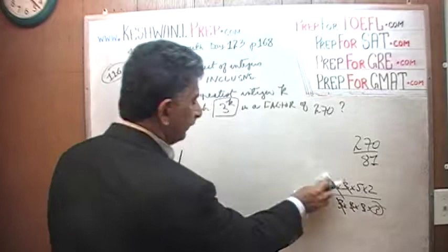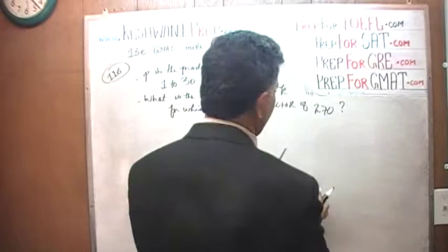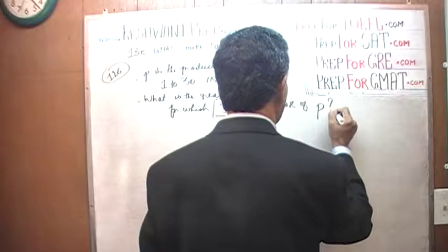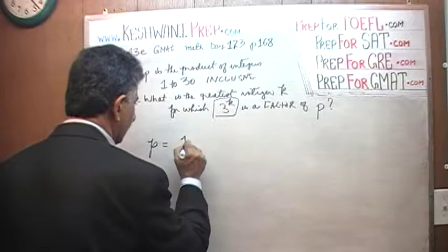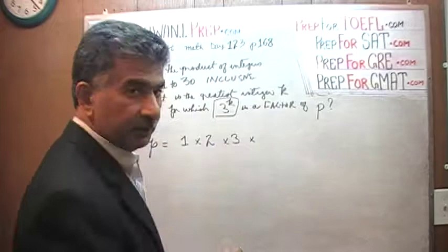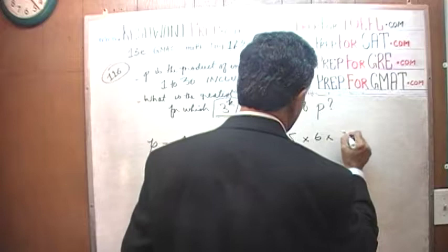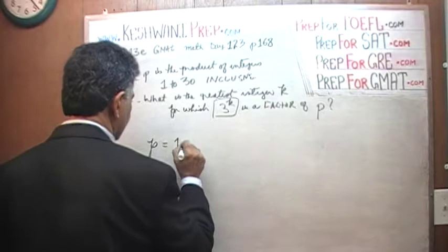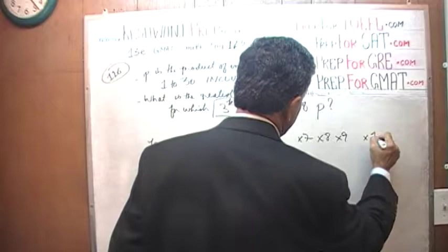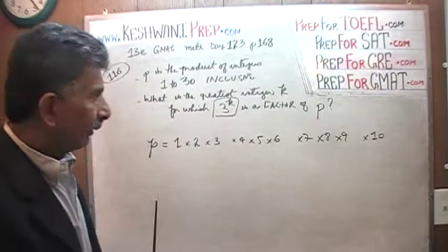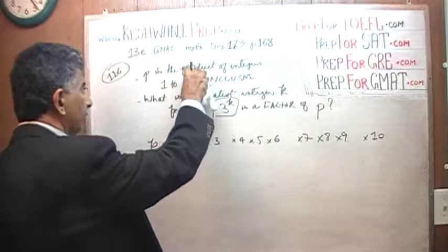Now let's do the actual problem. Here we don't have a nice easy number like 270 — P is the product of all the integers 1 through 30. That's a very large number. Let's not be overwhelmed. Let's start with something simple and work up step by step.